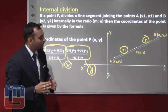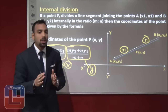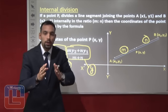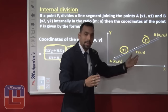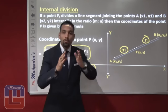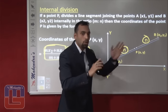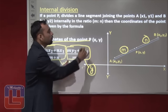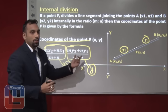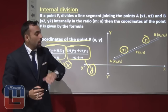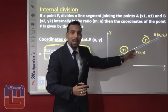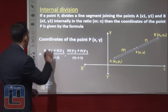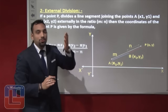So what we have discussed: if we have given 2 points X1Y1 and X2Y2 and there is a point P inside the line that divides it in the ratio M:N, the coordinates of the point P will be those formulas. As it is, if this point P lies outside the line segment, the condition will be the external division.